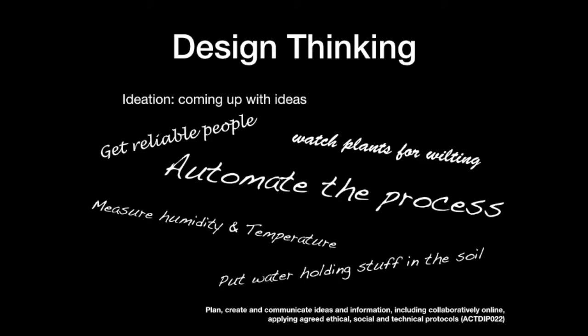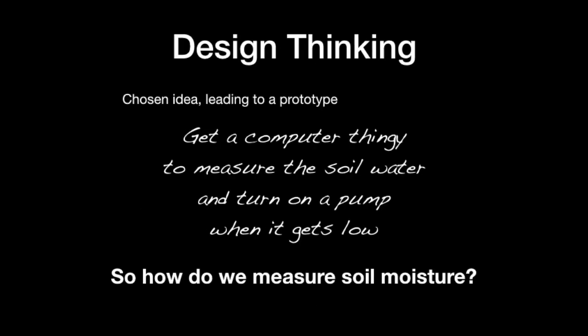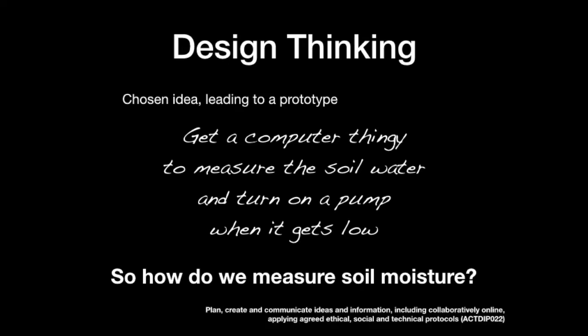So the idea of automating this process looks like a good solution. We can take this to a prototype stage after ideation — some sort of prototype might be: get a computer to measure the soil water and turn on the pump when it gets low. That asks the question: how do we measure soil moisture? There might be lots of different ways to do that. We're going to investigate one prototype, but we could come back in the design cycle and explore different prototypes.